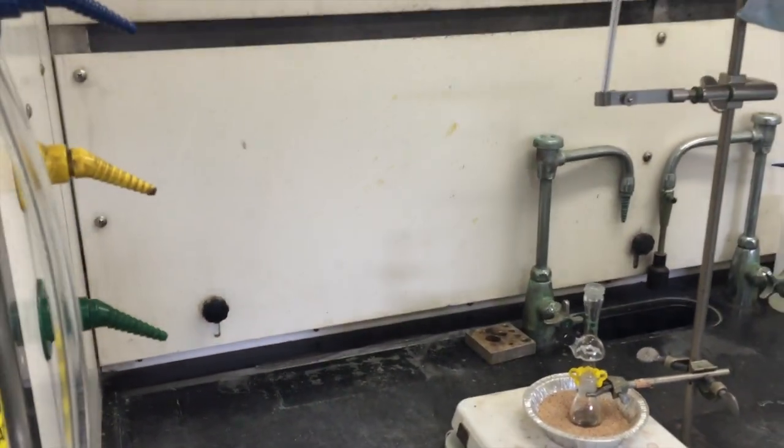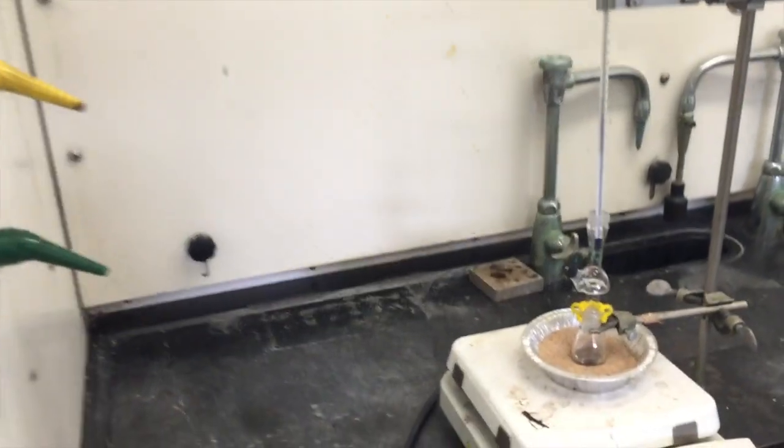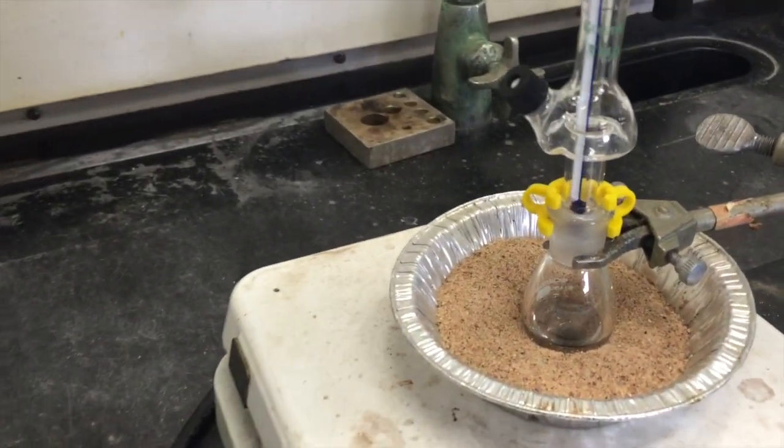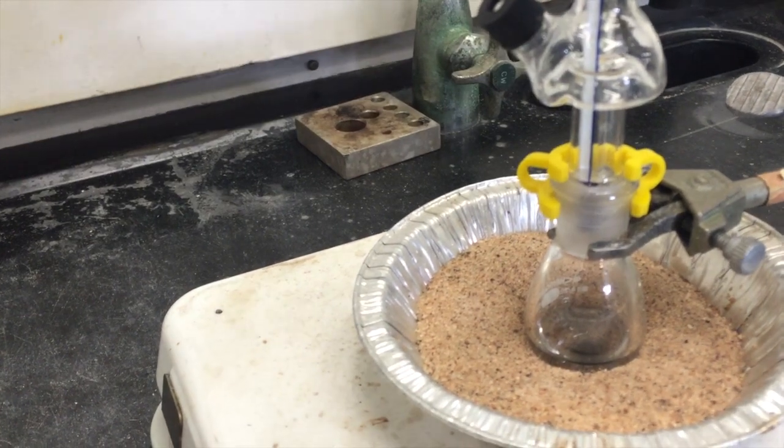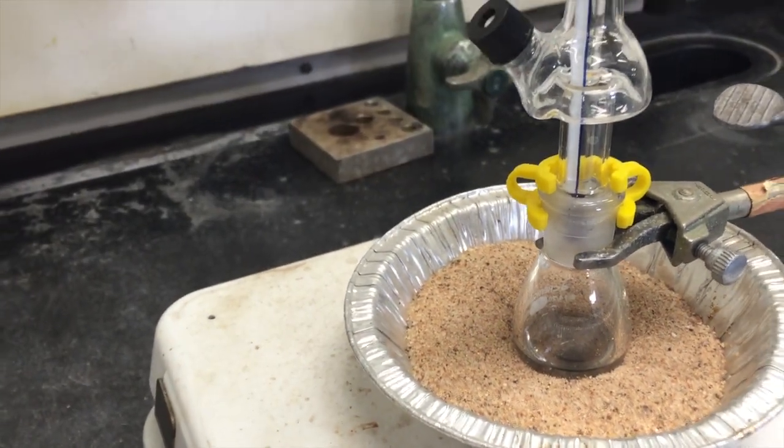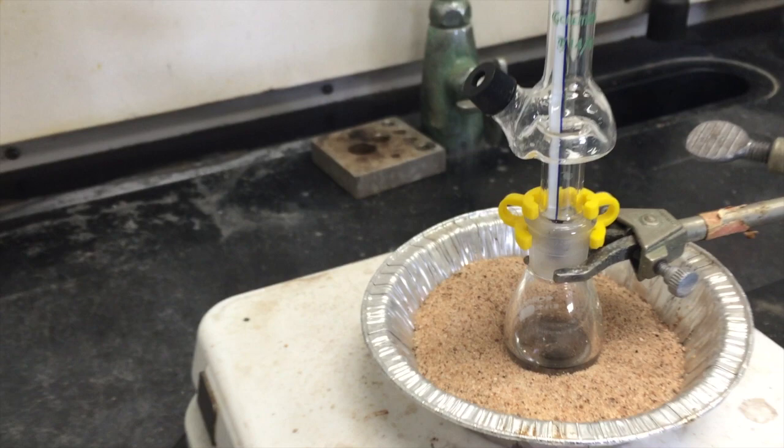Clamp a thermometer to the ring stand and insert it into the Hickman still so that it is not touching the sides of the glass and it is nestled well within the joint to ensure an accurate reading. Solvent will evaporate and condense at the top of the Hickman still and then collect in the lip.